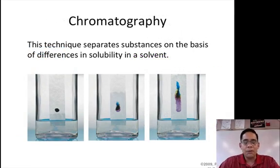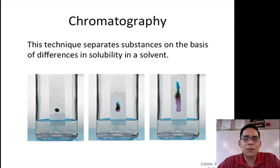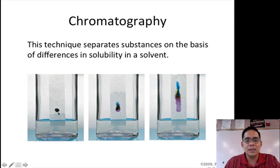The third thing is called chromatography. And the technique of chromatography separates substances on the basis of differences in solubility in a solvent. So ink, in particular, is one of those things that we can separate in this class. In any ink, particularly black ink, there's a combination of colors that are in there. And the idea is that when you dip this in water, water will slowly rise up the paper.